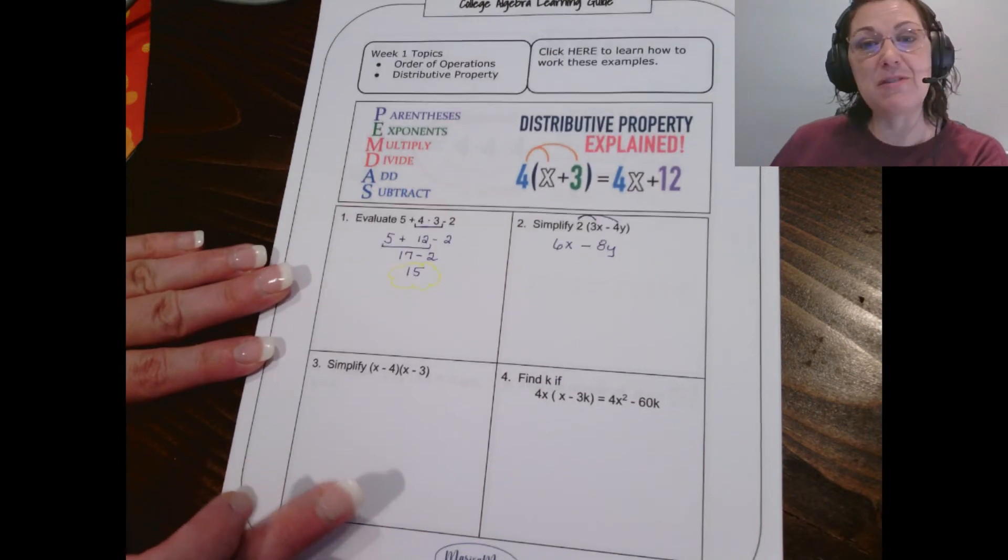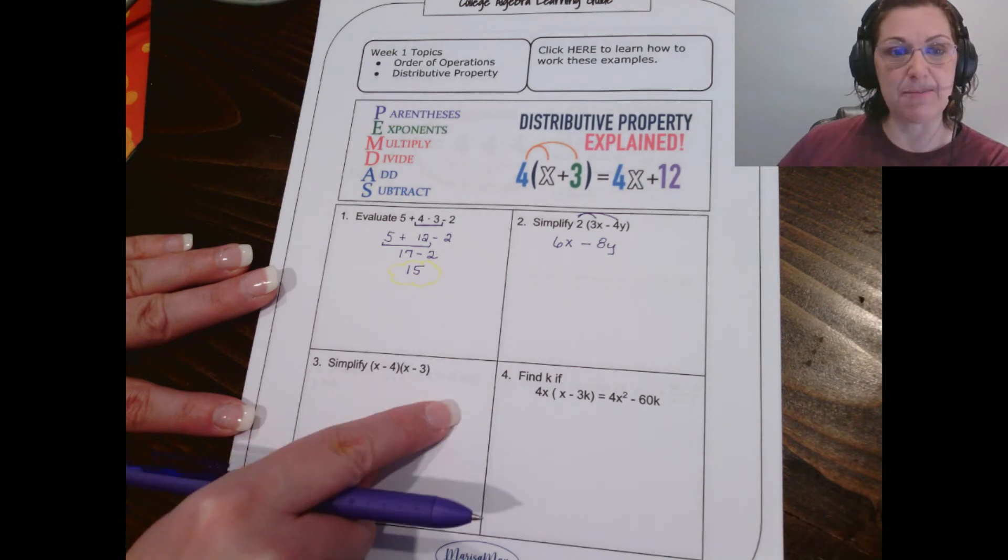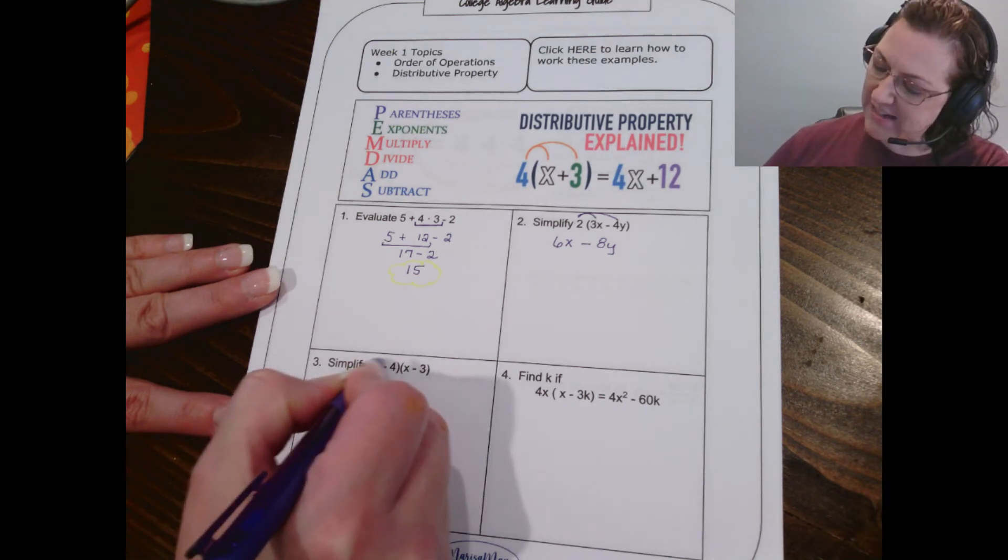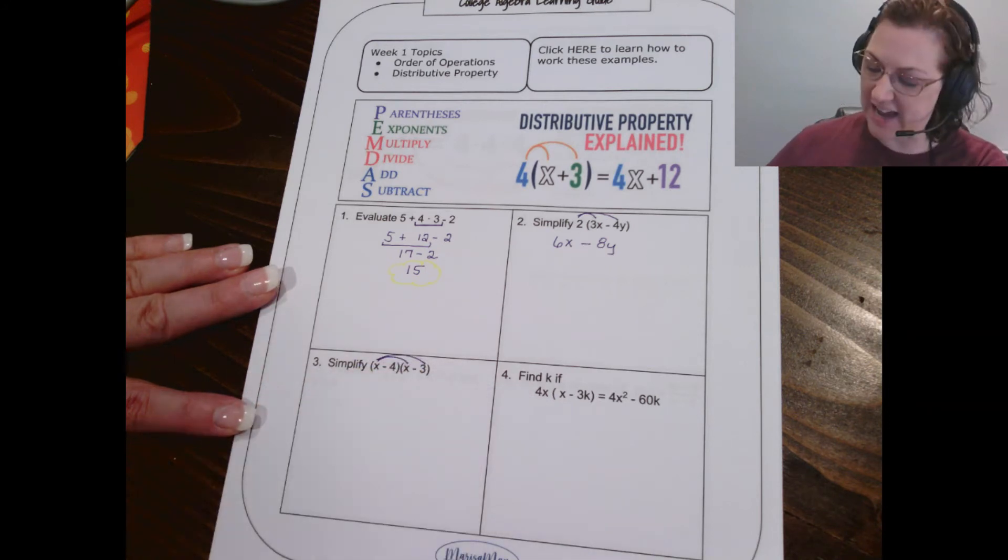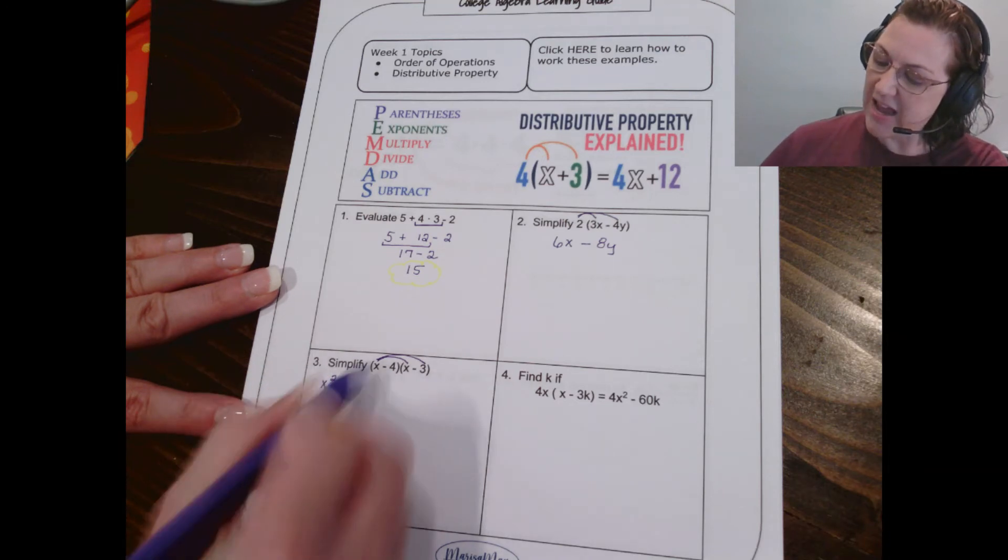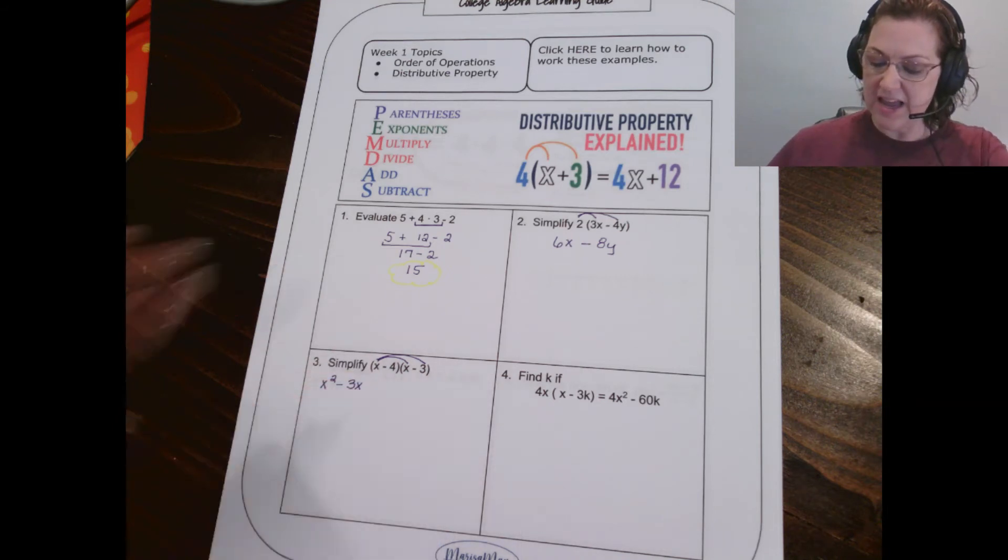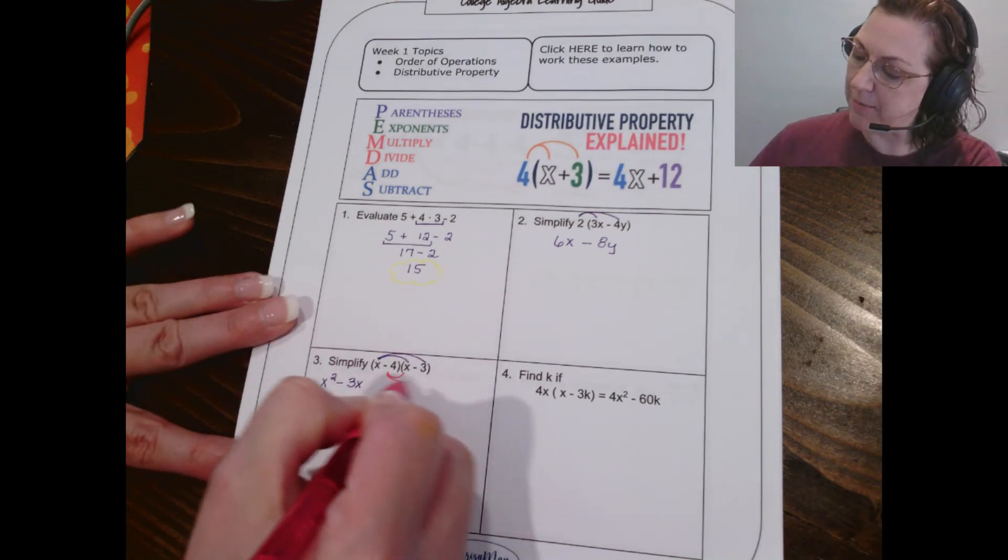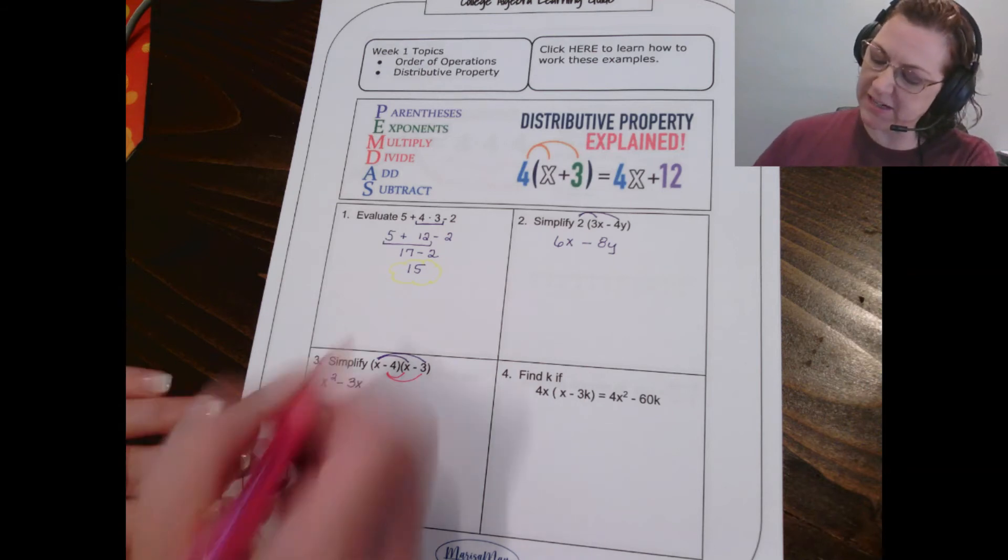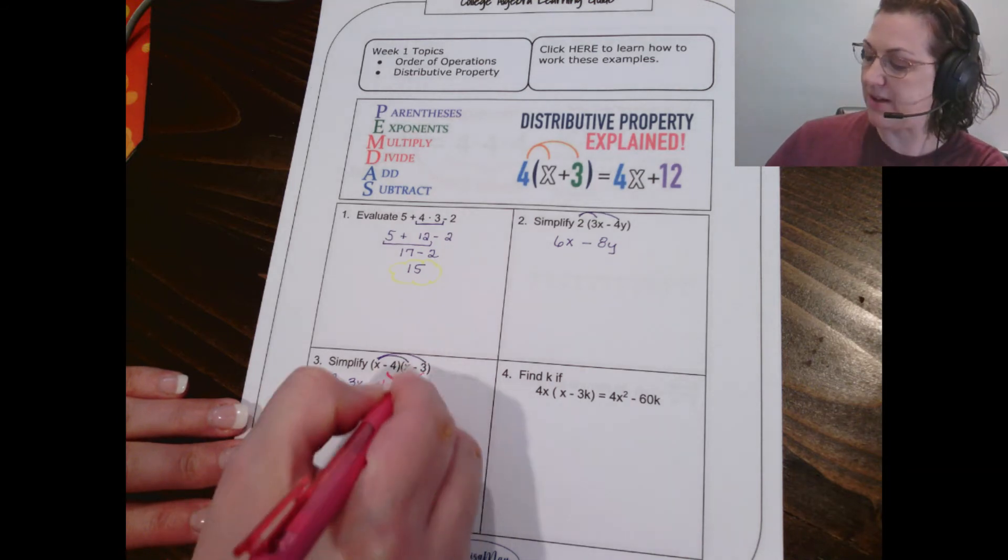In problem 3, we're going to use the distributive property as well. We're just going to use it in a little bit different way. We're going to distribute both terms in the first parentheses to the second parentheses. So, that means we're going to distribute the x first. When we do that, x times x gives me x squared. And x times minus 3 gives me negative 3x. Then, let us distribute negative 4 to both terms in the second parentheses. Negative 4 times x would give me negative 4x. And negative 4 times negative 3 would give me positive 12.